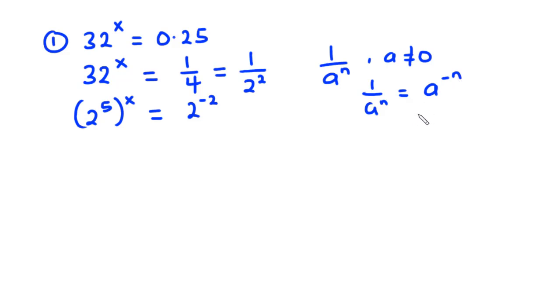So if you have 1 over 2 exponent 2, then it's equal to 2 exponent negative 2. So that is what we have here.